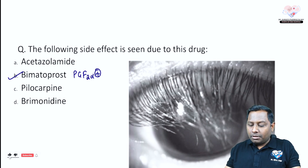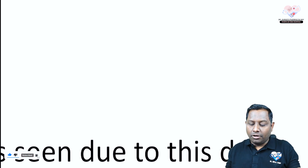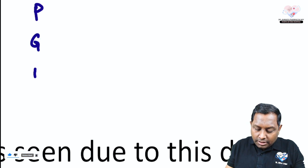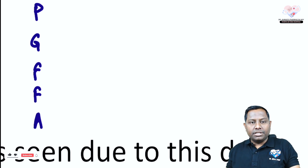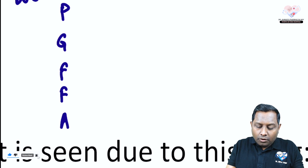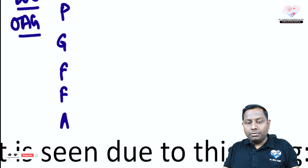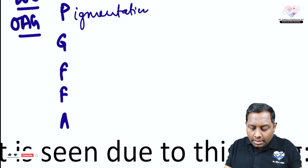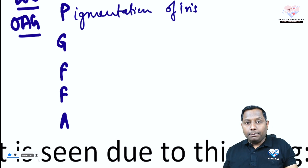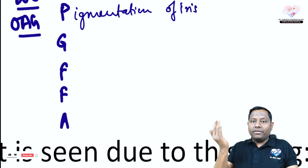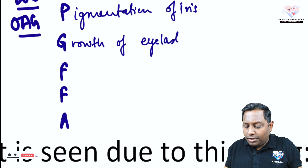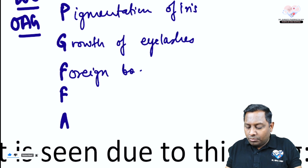Remember the side effects of PGF2-alpha analogs using the simple mnemonic 'PGF2-alpha' itself. Write it as P-G-F-F (double F) and alpha — these represent the important side effects. PGF2-alpha analogs are the drug of choice for open-angle glaucoma — drugs like latanoprost and bimatoprost — and they cause pigmentation of the iris, called heterochromia iridis or hyperchromia iridis, because one eye color becomes different from the other. They also cause growth of eyelashes, i.e., hypertrichosis, and foreign body sensation.